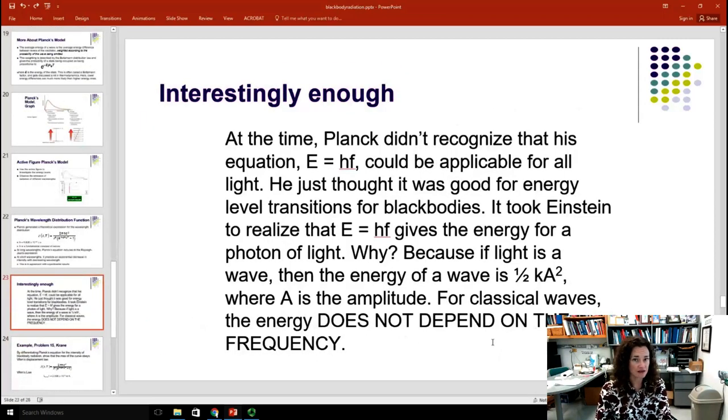Now, interestingly enough, at the time, Planck did not recognize that his equation, E is equal to hf, could be applicable for all light. He didn't make that leap and say light has energy, E is equal to hf. He just thought that it was good for energy level transitions in black body radiators. It took Einstein, as we already discussed in the photoelectric effect, to realize that E is equal to hf gives the energy for a photon of light. Now, why was this such a big leap? To remind you.